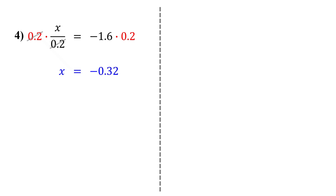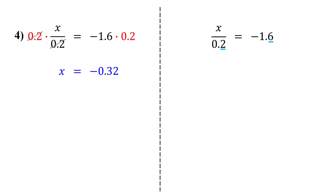Now let's see if clearing the decimals first makes things easier. In both 0.2 and 1.6, there is one digit after the decimal point. But be careful — you cannot just multiply each decimal by 10. That would make the equation unbalanced. Instead, we multiply both sides by 10 over 10, which is just 1. This keeps the equation balanced while eliminating the decimals. This gives us 10x over 2 equals negative 16 over 10.